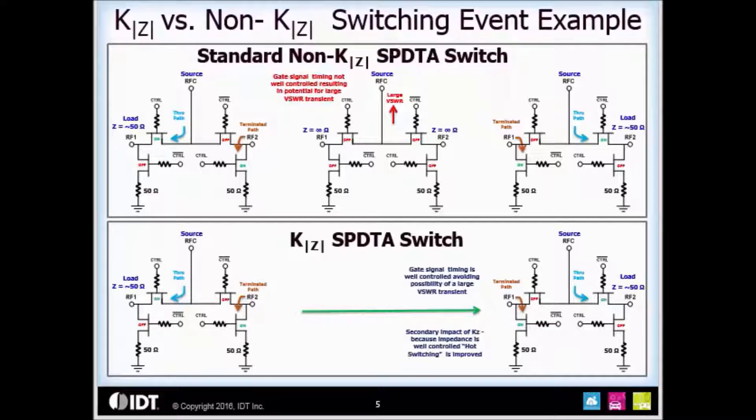Now let's switch the RF path connecting RF common to RF2. The standard switches do not control the timing very well at individual gate control signals when switching RF ports. The top center drawing shows it's possible for both RF1 and RF2 series FETs and the shunt FETs to all be off at the same time, resulting in a large impedance change. With all the FETs off, RF common goes from 50 ohms to high impedance, creating a large VSWR transient on RF common reflecting the signal back to the source. This transient would create a high voltage stress on the switch itself as well as any components connected to RF common.